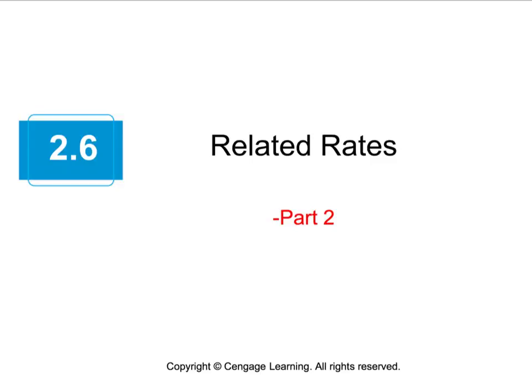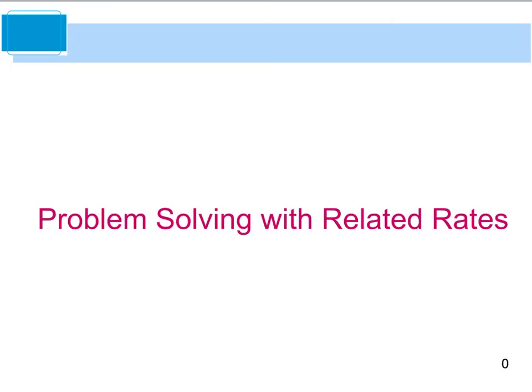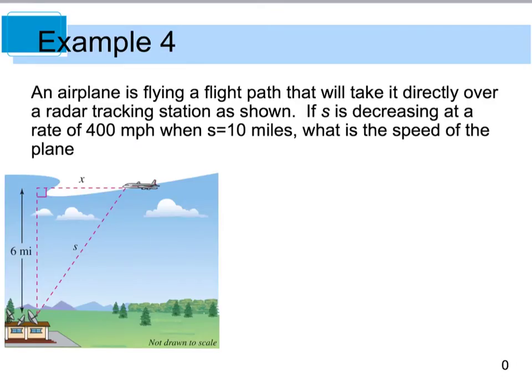Hello and welcome back to the second part of section 2.6. We're going to do one more example that deals with problem solving with related rates. This example says an airplane is flying a flight path that will take it directly over a radar tracking system as shown. If s is decreasing at a rate of 400 miles per hour when s equals 10, what is the speed of the plane?